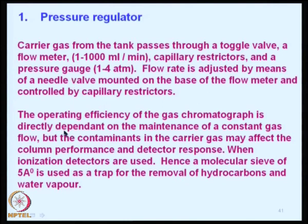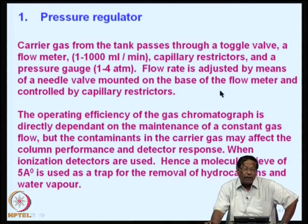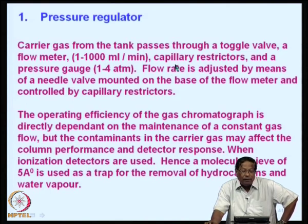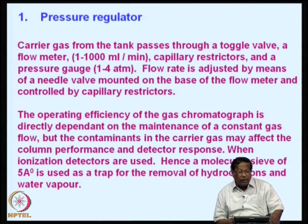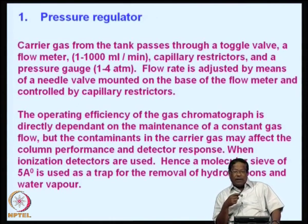The carrier gas from the tank passes through a toggle valve and a flow meter providing about 1 to 1000 milliliters per minute, with capillary restrictors and a pressure gauge of about 1 to 4 atmospheres. Flow rate is adjusted by a needle valve mounted on the base of the flow meter and controlled by the capillary restrictor. The operating efficiency of the gas chromatograph is directly dependent on maintenance of constant gas pressure, which controls the success of a chromatographic separation.